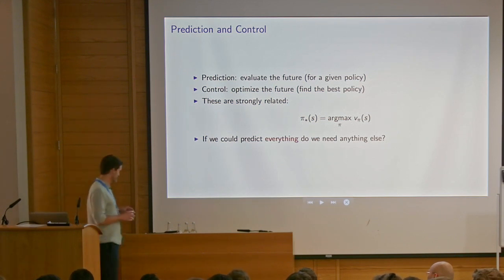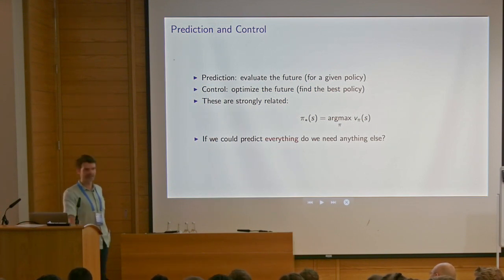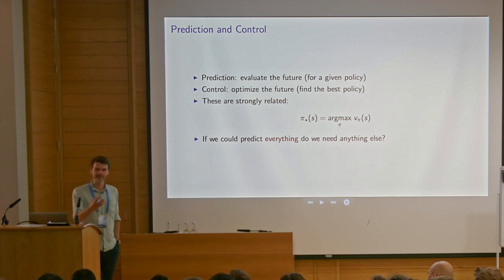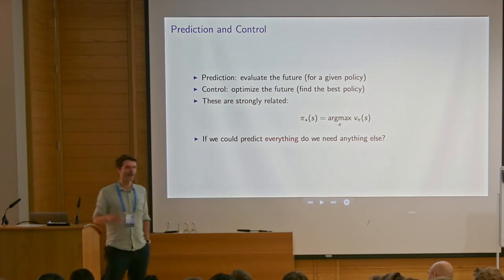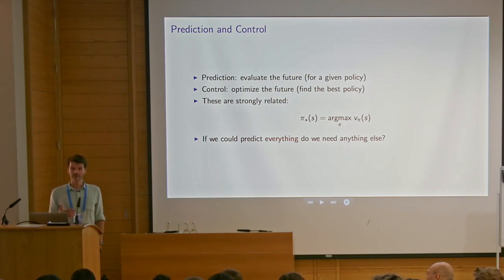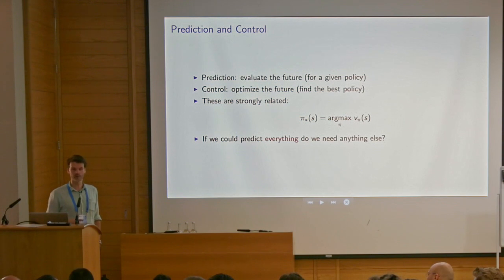Some more terminology — let's also be clear about the difference between prediction and control. These are distinct goals. Control is a word used to basically mean find the optimal solution, coming from control theory. Sometimes this can be slightly confusing because some people think of controlling something as keeping it in a certain state, equilibrium. But we use it more generally to also find something that just optimizes your return. Prediction, separately, is to evaluate the future — to be able to predict what's going to happen. Prediction can be encoded in terms of value functions, and control can be encoded in terms of an optimal or approximately optimal policy.